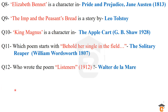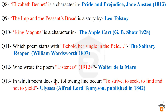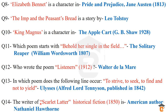Question number 12: who wrote the poem The Listeners, published in 1912? The composer of this poem was Walter de la Mare. Question number 13: in which poem does the following line occur — 'To strive, to seek, to find, and not to yield'? This is a famous line from the poem Ulysses, composed by Alfred Lord Tennyson and published in 1842. Note that Ulysses is also a novel by James Joyce, so don't be confused — when referring to the poem, it is by Alfred Lord Tennyson.